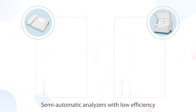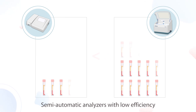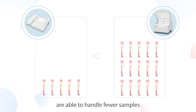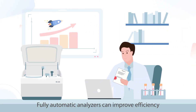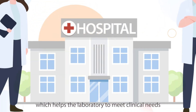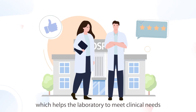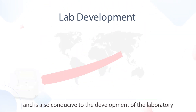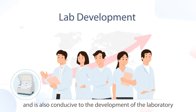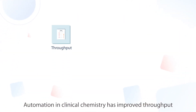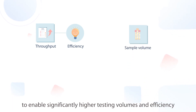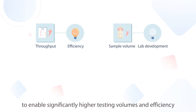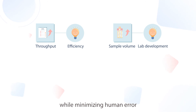Semi-automatic analyzers with low efficiency are able to handle fewer samples. Fully automatic analyzers can improve efficiency, which helps the laboratory to meet clinical needs and is also conducive to the development of the laboratory. Automation in clinical chemistry has improved throughput to enable significantly higher testing volumes and efficiency while minimizing human error.